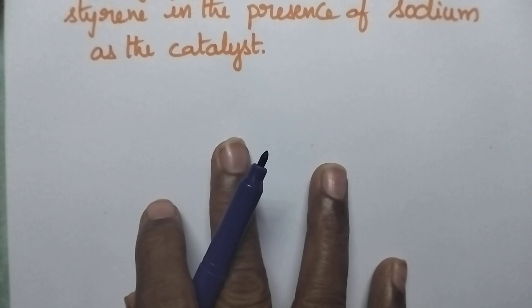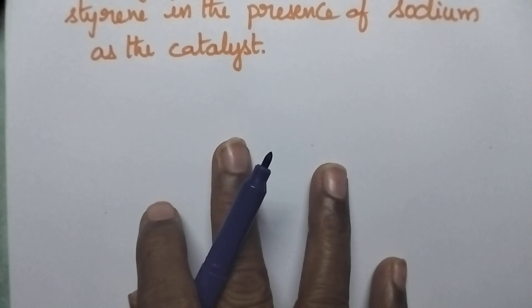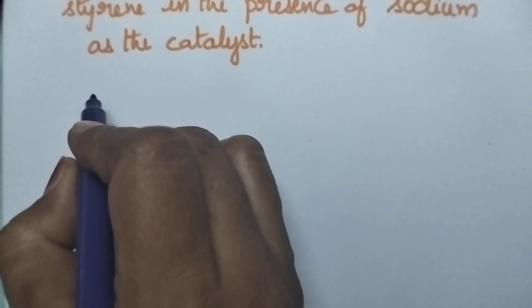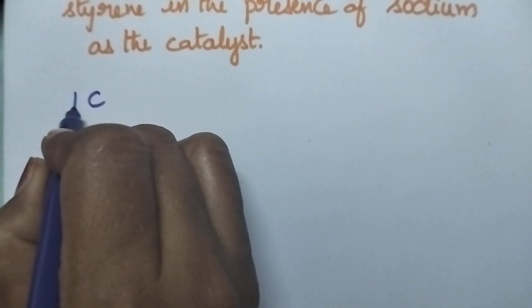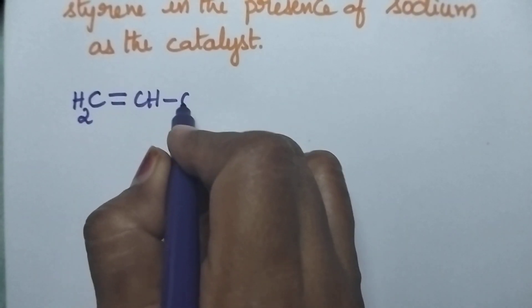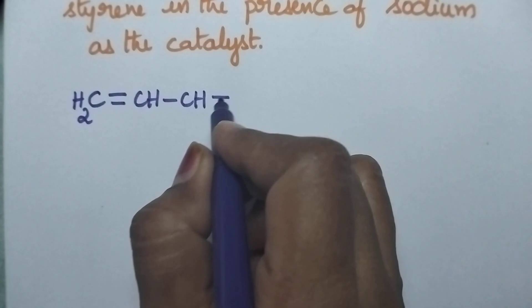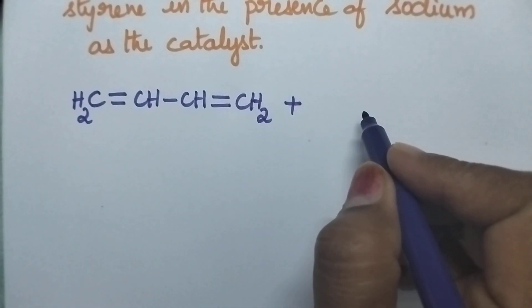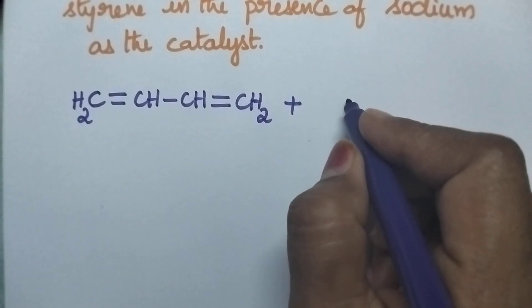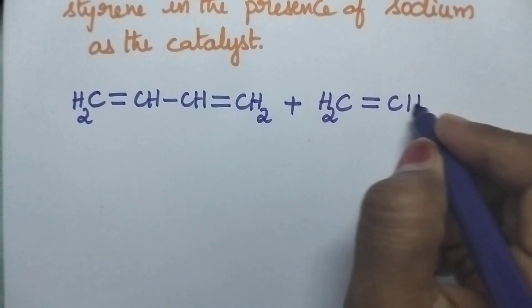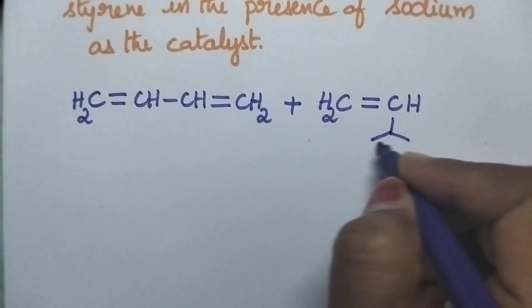Coming to the structure of 1,3-butadiene, it can be represented as CH2=CH-CH=CH2. Coming to the structure of styrene, it can be represented as CH2=CH attached to a benzene nucleus.